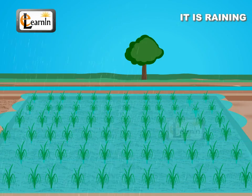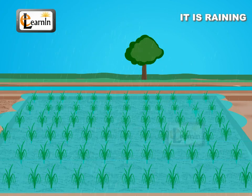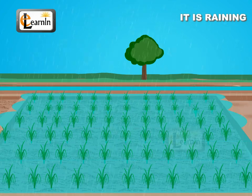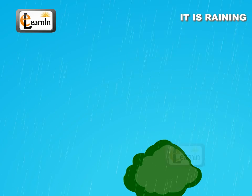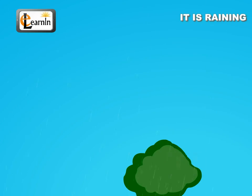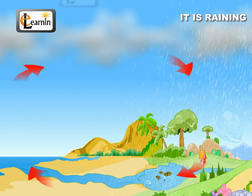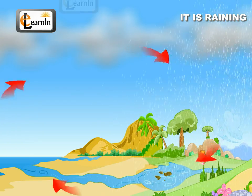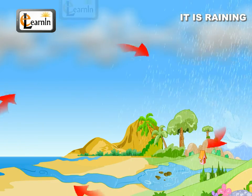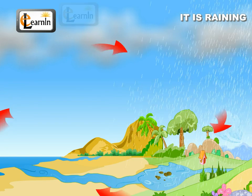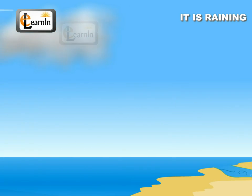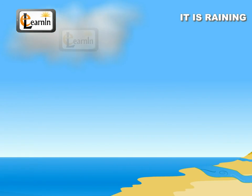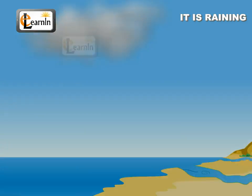Rain helps vegetables and farms to grow, and farmers rely on it. Rain is one of the most important sources of water on the planet. A cyclical process is repeated continuously in which the Sun evaporates water from various water bodies like the oceans, lakes, rivers, and ponds.